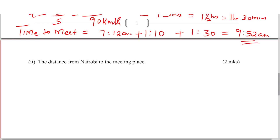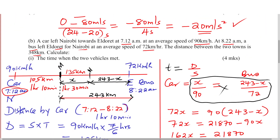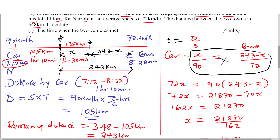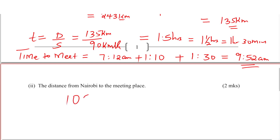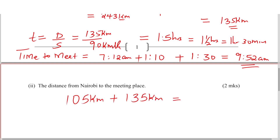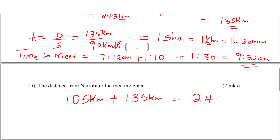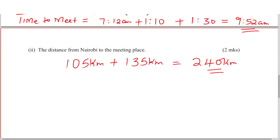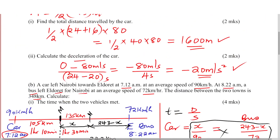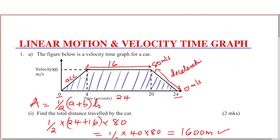The last question: distance from Nairobi to the meeting place. The car traveled 105 kilometers first, then 135 kilometers to the meeting point. So the total distance is 105 plus 135, which equals 240 kilometers. That is how you solve this question on linear motion and velocity time graph. Thank you.